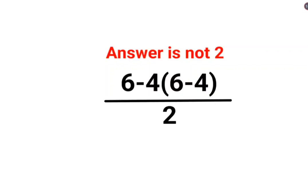Welcome everyone. A lot of people thought that the answer for this one is supposed to be 2 because 6-4 is 2 and 6-4 is also 2, and since there is no sign between this and the bracket, that means it is multiplication.